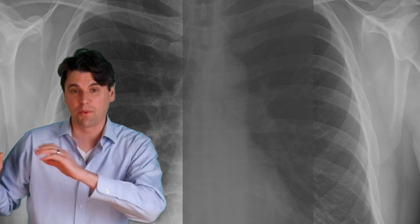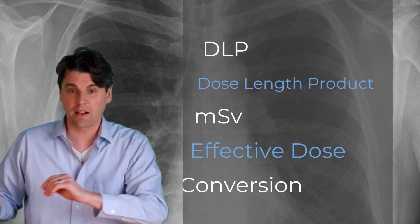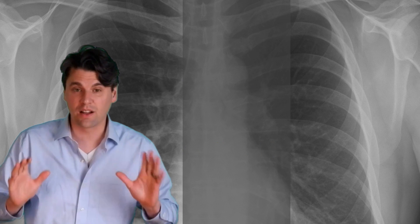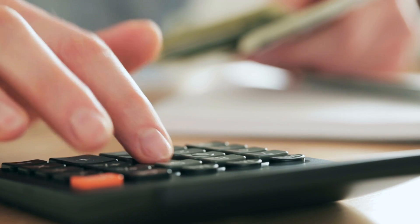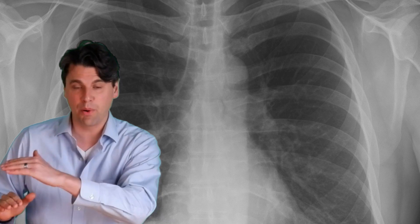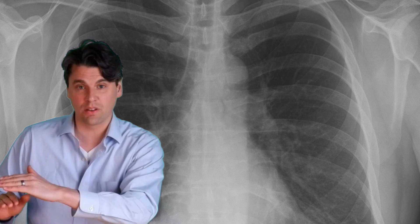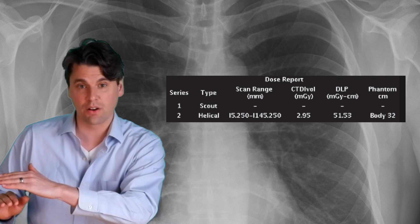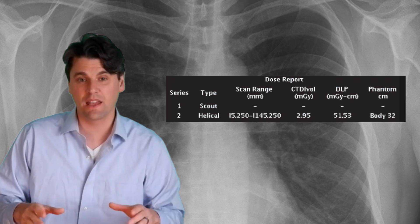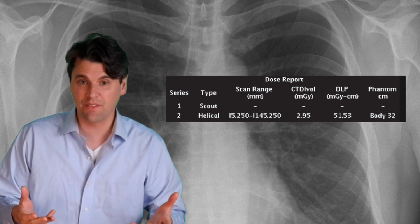Rad Nation, today we're talking about how to go from dose length product to effective dose, which is in millisieverts, using a simple calculator. So on your CT scanner, you'll typically get an output that's a dose length product in your dose report. And if you want to have an estimate in millisieverts, you can use this simple calculator. We're going to go through some examples right now.